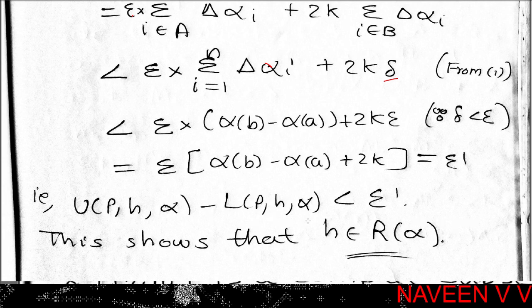Using Σ_{i∈B} Δα_i < delta < epsilon and Σ_{i=1}^{n} Δα_i = α(b) − α(a), we get U(P, h, α) − L(P, h, α) < epsilon · [α(b) − α(a)] + 2k · epsilon = epsilon · [α(b) − α(a) + 2k]. Since α(b) − α(a) + 2k is a constant, h is Riemann-Stieltjes integrable with respect to α over [a, b].